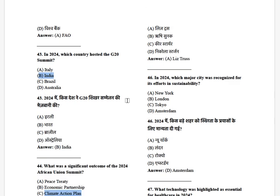In 2024, which major city was recognized for its efforts in sustainability? The options are: New York, London, Tokyo, and Amsterdam. The answer is Amsterdam.